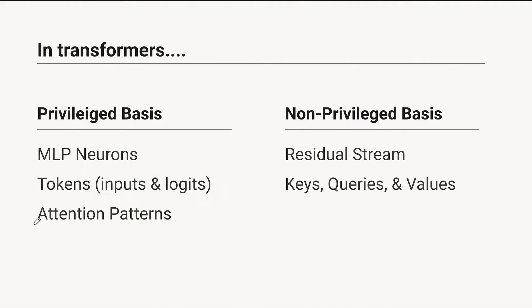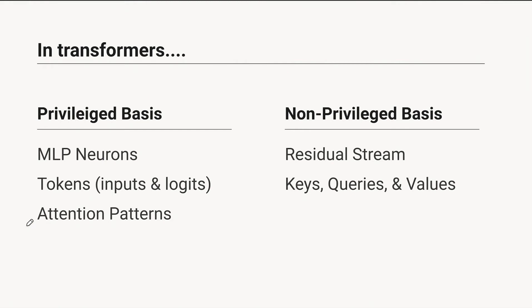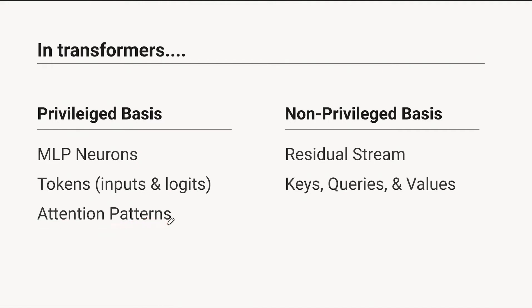Now another one that's easy to forget about is attention patterns. For a given pair of tokens, you have your dot product of the key and the query, which is the score. Then after you apply a softmax across the tokens, you get a probability distribution. Because there's only one dimension per token, that really encourages a privileged basis even for the scores before the non-linearity. And softmax is very non-linear, so that's also going to encourage a privileged basis.